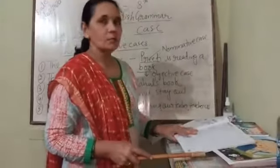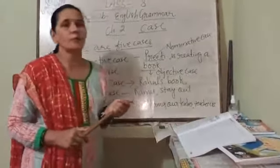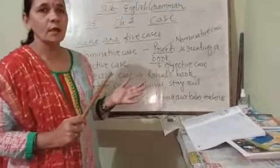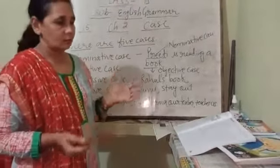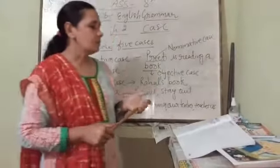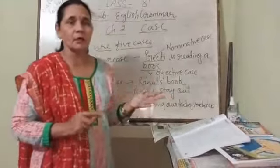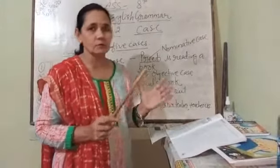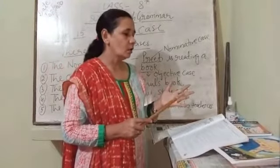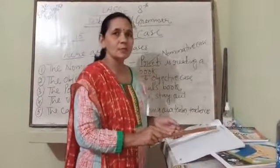After this, page number 17, question number 1: identify the case of each noun and pronoun in the following sentences. For example, the first sentence: 'Kabir presented Kavitha a book.' Here Kabir is the noun subject, so that is nominative case. Kavitha is the objective, so that is objective case. And 'book' was also objective — that is also objective case.